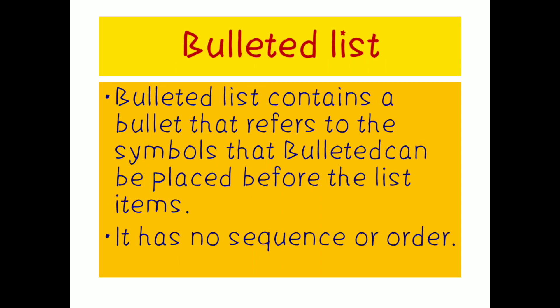Bullet list: as we already discussed, it contains a bullet — that means there is a small dot before each list item. If it is a bullet list, we won't have any sequence. That means there is no rule that after this point only we should write that point. First I can write bullet list contains a bullet referring to the symbol that can be placed before list items — it has no sequence or order. First whichever point I want to write, I can write. That is my choice, if it is a bullet list.